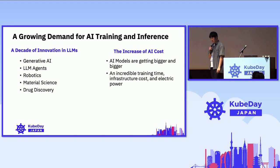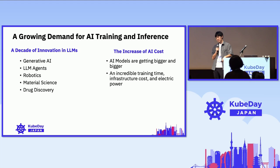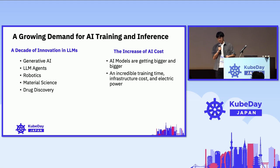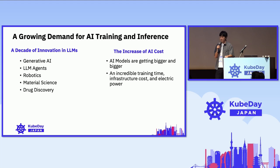That means the increasing AI cost is non-negligible. AI models are getting better and bigger, with tons of models having over 10 or 100 billion parameters. That makes incredibly long training times — over days, or weeks, or maybe one month.